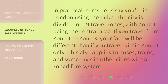In practical terms, let's say you're in London using the tube. The city is divided into nine travel zones, with zone one being the central area. If you travel from zone one to zone three, your fare will be different than if you travel within zone one only. This also applies to buses, trains, and some taxis in other cities with a zoned fare system.